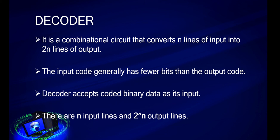Let's move on to decoder. Decoder is a combinational circuit that converts n lines of input into 2 power n lines of output. The input code generally has fewer bits than the output code. Decoder accepts code binary data as its input. There are n input lines and 2 power n output lines.